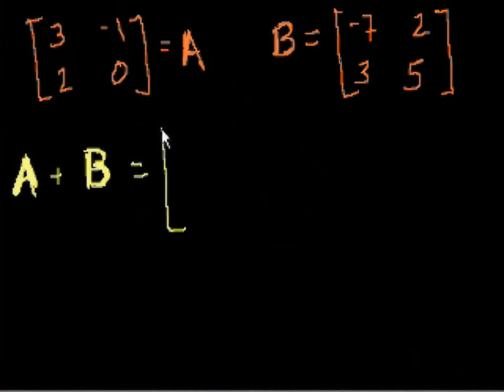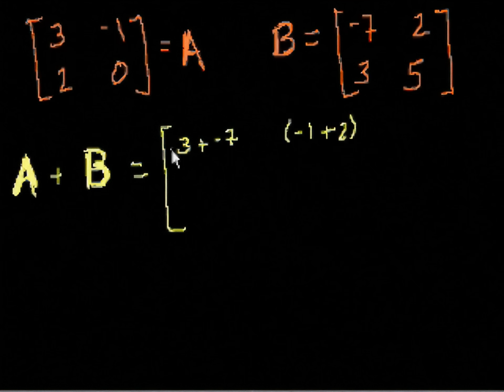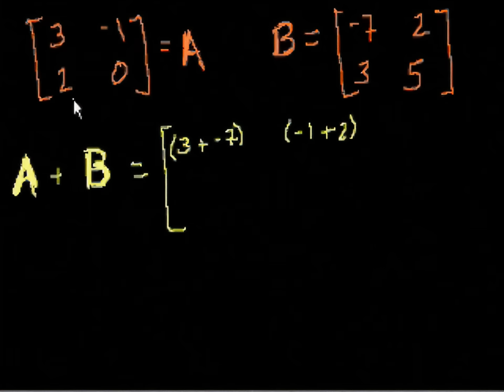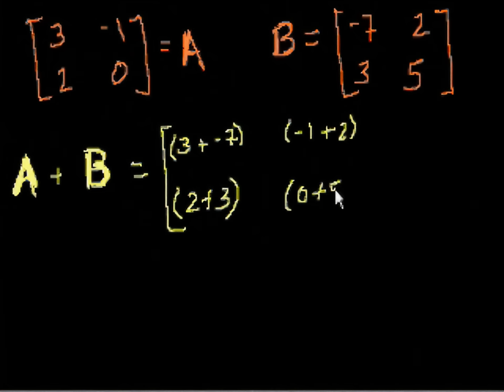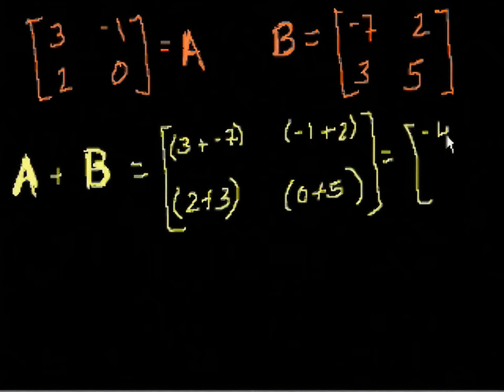So how does that work? Well, you add the element that's in row 1, column 1 to the element in row 1, column 1. So it's 3 plus minus 7. That'll be the 1,1 element. Then the row 1, column 2 element will be minus 1 plus 2. And you could guess how this keeps going. Then this element will be 2 plus 3. And this last element will be 0 plus 5. So that equals what? 3 plus minus 7, that is minus 4. Minus 1 plus 2, that's 1. 2 plus 3 is 5. And 0 plus 5 is 5. So there we have it. That is how we humans have defined the addition of two matrices.